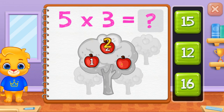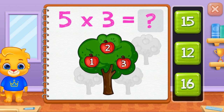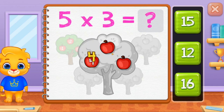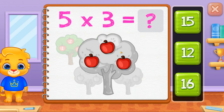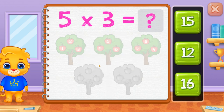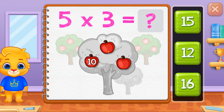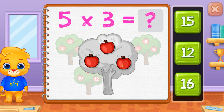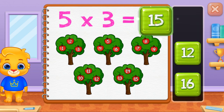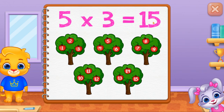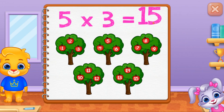One, two, three, four, five, six, seven, eight, nine, ten. Eleven, twelve, thirteen, fourteen, fifteen. Five times three equals fifteen.